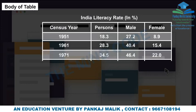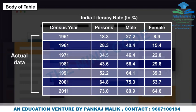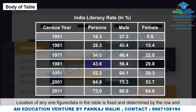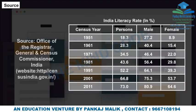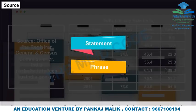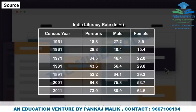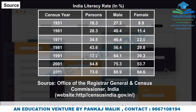Body and Source: The body of the table holds the actual data. The location of any figure in the table is fixed and determined by its row and column. The source is a statement or phrase showing the origin of the data presented in the table, usually written at the bottom.